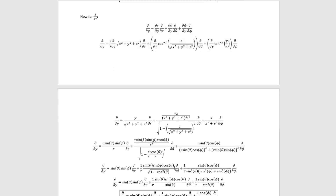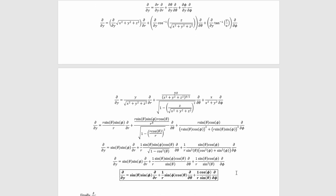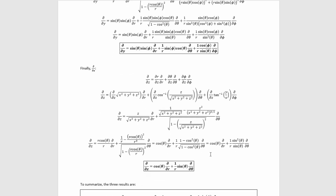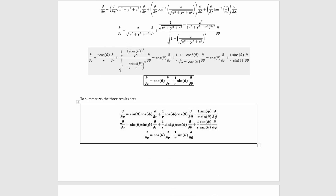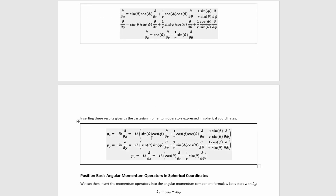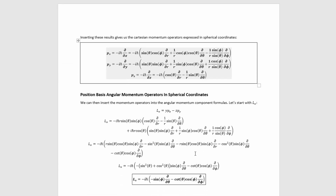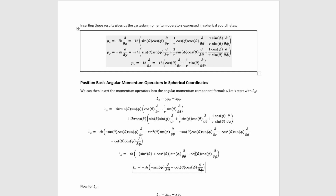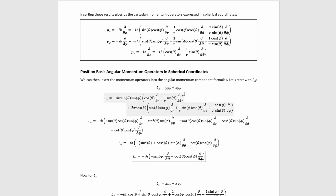I will show you the algebra written out for both d/dy and d/dz so you can check your results. For d/dz, a term drops out because the expression doesn't depend on z, simplifying things considerably. To summarize, we have these three values for the Cartesian partial derivatives in terms of spherical coordinates. We can then plug these into the linear momentum operators to get them expressed in spherical coordinates. Then we plug these momentum operators and the spherical coordinate formulas for x, y, z into the angular momentum component formulas, getting the angular momentum component operators in spherical coordinates.